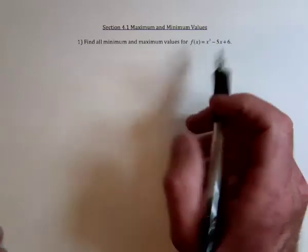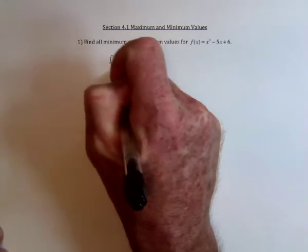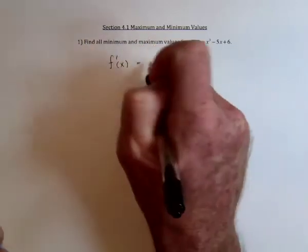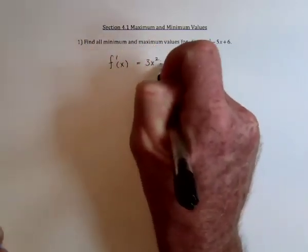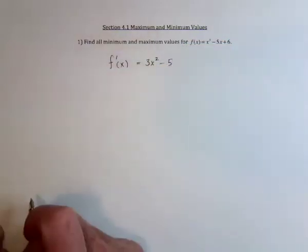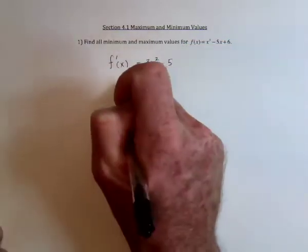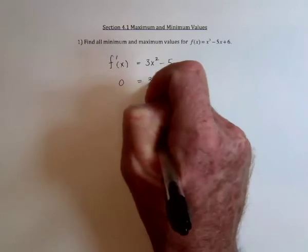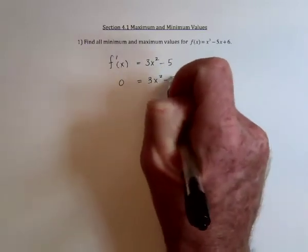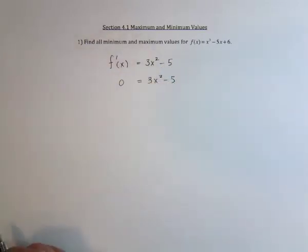So that's the first thing to do is take the derivative, which is 3x squared minus 5, and then set that equal to zero and solve for x. And since we've got an x squared, we're going to get two answers.